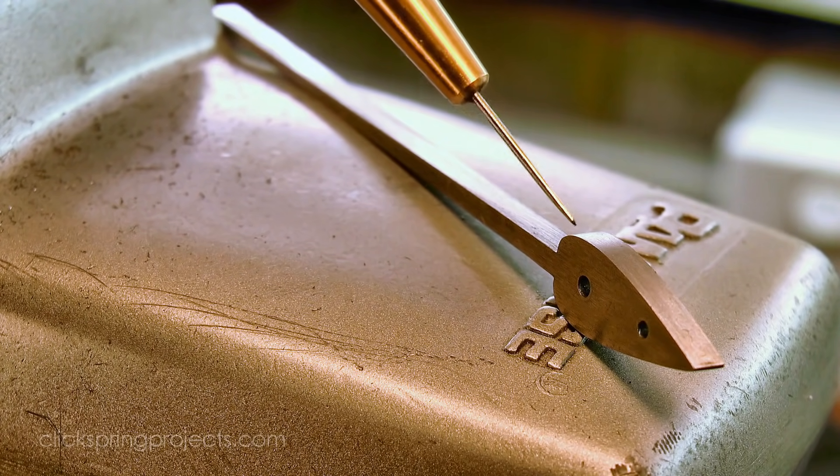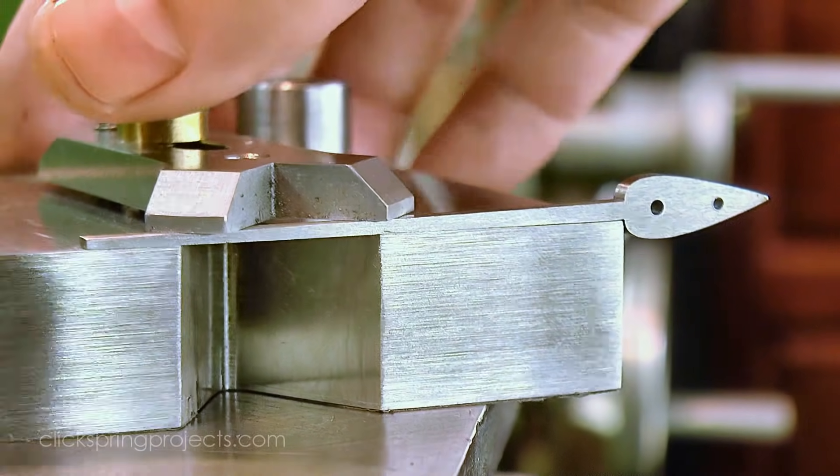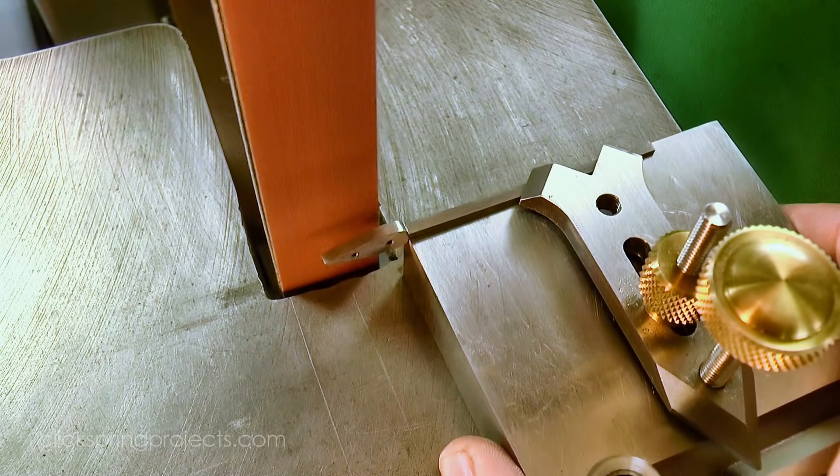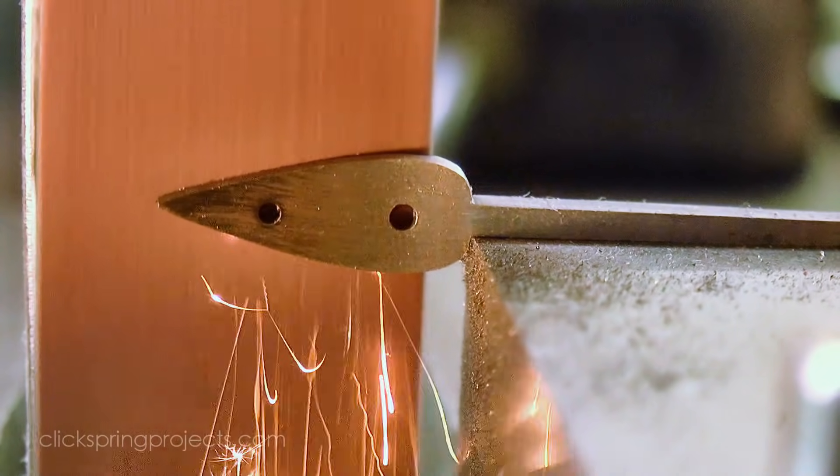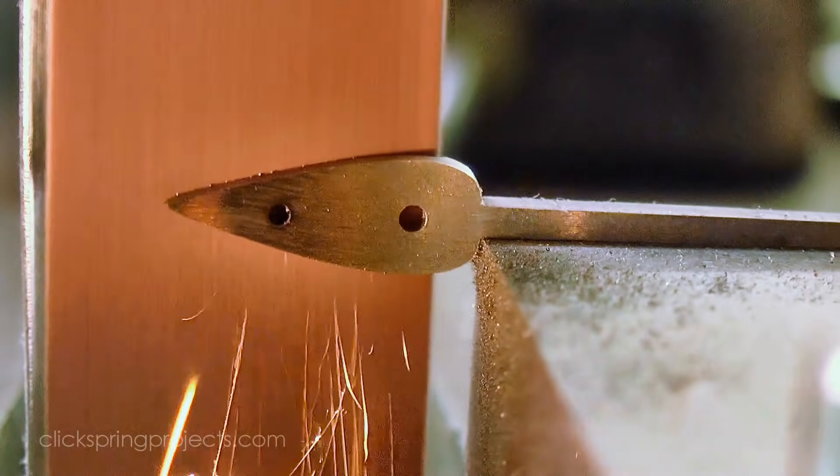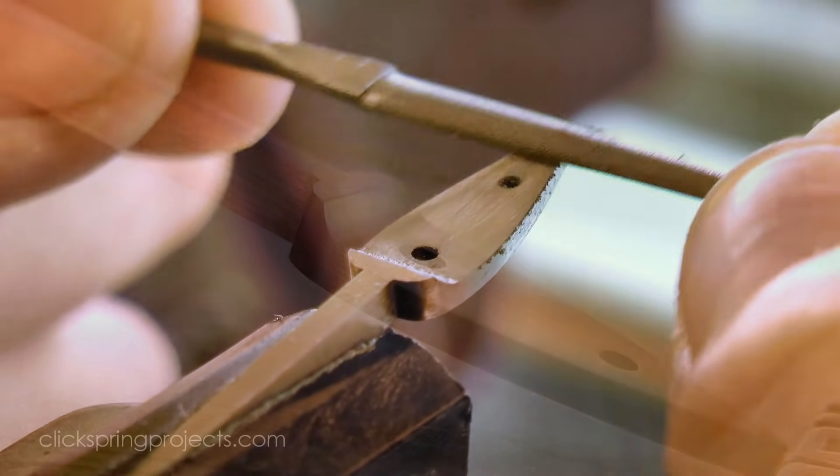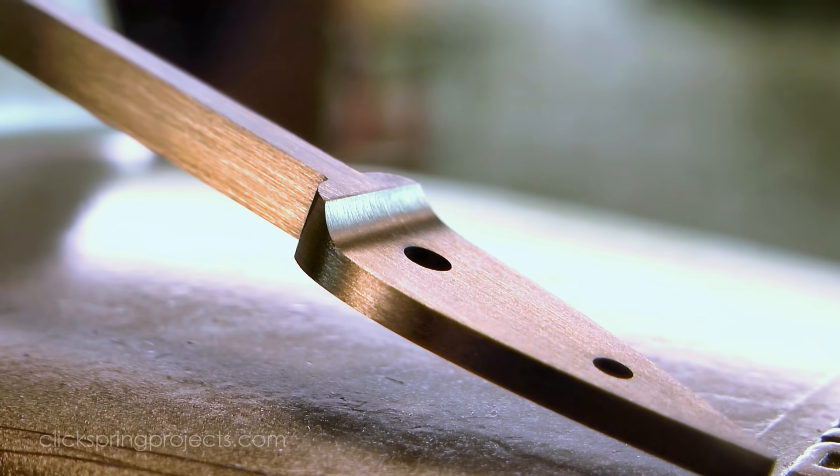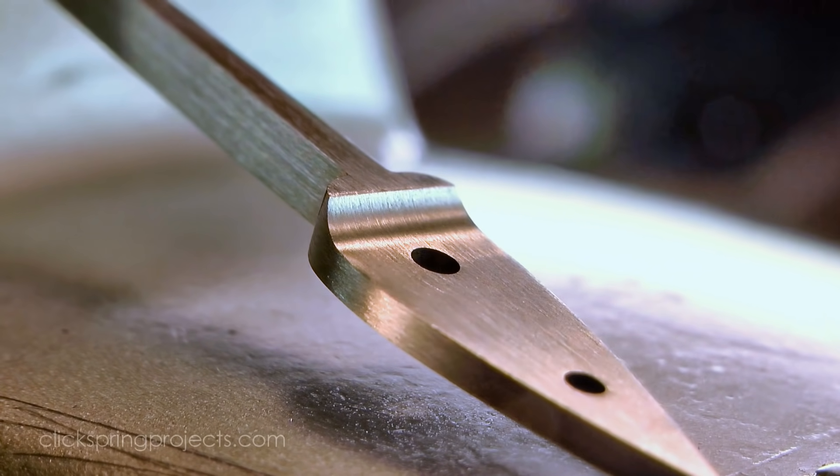This teardrop section needs to be thinned down too, which is another great job for the belt sander. Some final finishing with needle files, and that's the click spring done for the moment too. Again I'll leave it unhardened for now, just in case I need to make any small changes after fitting.